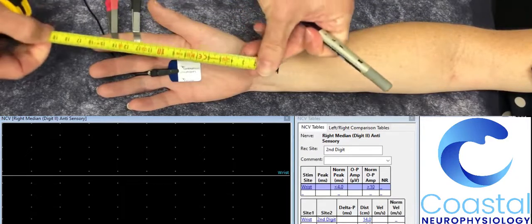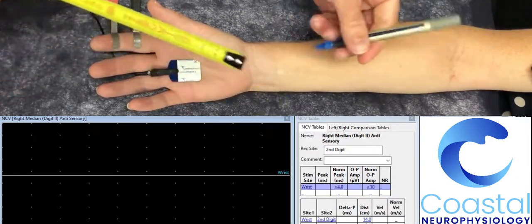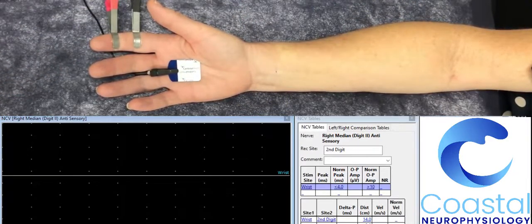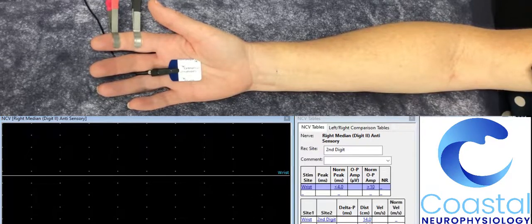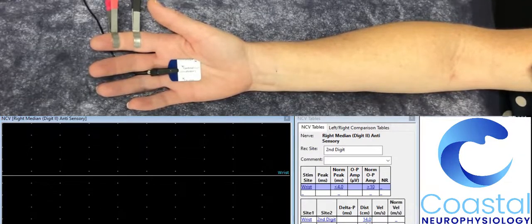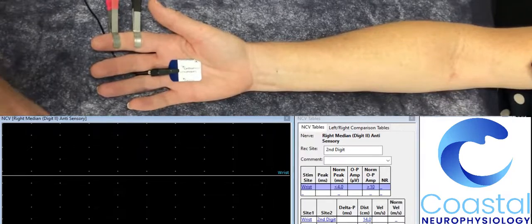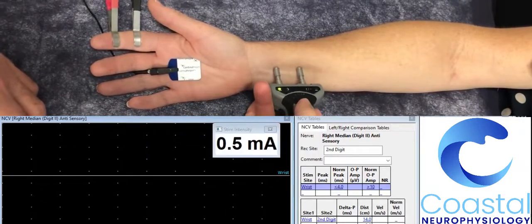If I measure a set distance from the electrodes and make a mark on her wrist, I can then stimulate the nerve directly at the wrist and propagate a sensory nerve action potential.